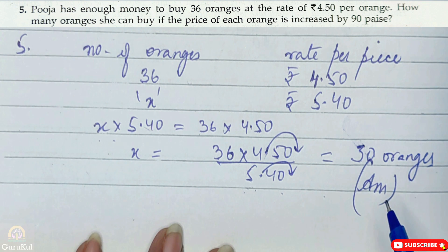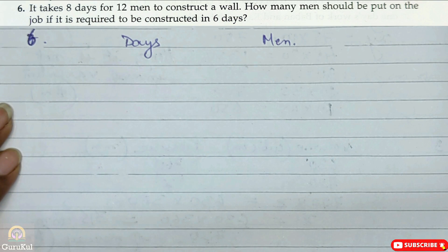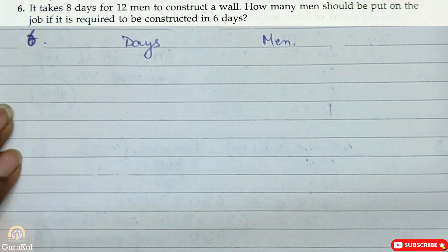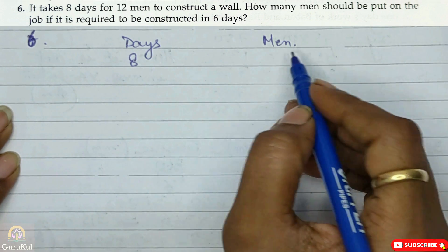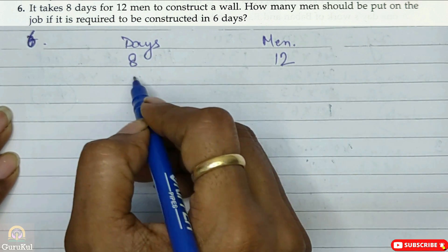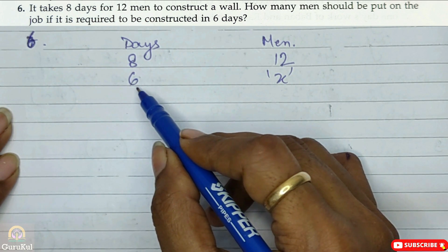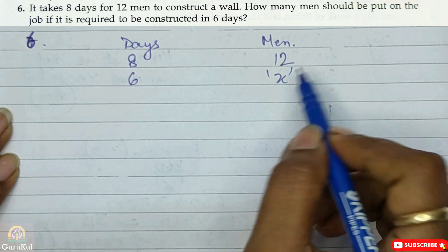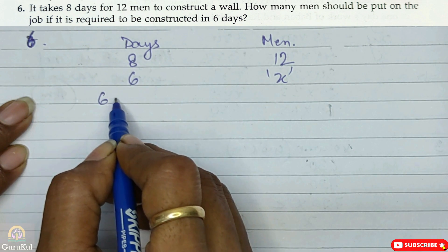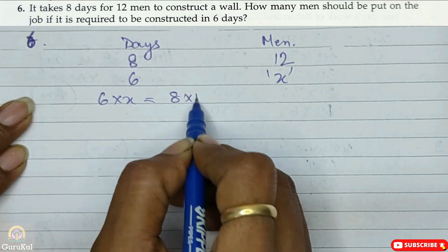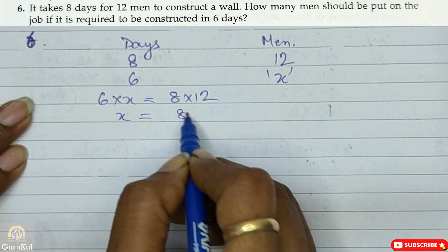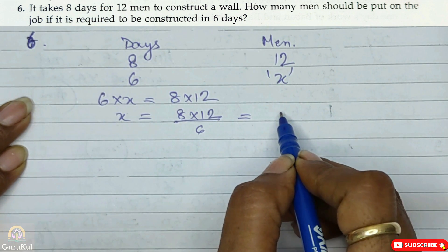Question number 6: It takes 8 days for 12 men to construct a wall. How many men should be put on the job if it is required to be constructed in 6 days? Less number of days means more men needed. So 6 × x = 8 × 12, giving x = 96 ÷ 6, so the answer is 16 men.